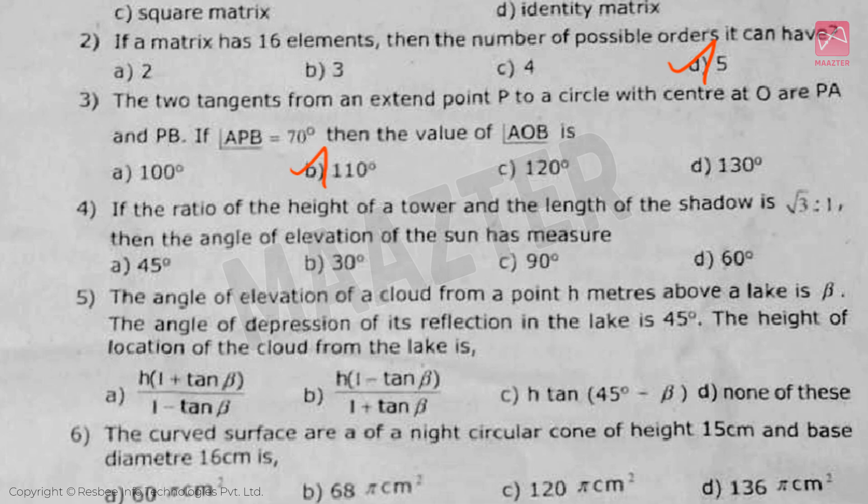Next, if the ratio of the height of a tower and the length of the shadow is root 3 is to 1, then the angle of elevation of the sun has measure, answer is option D.